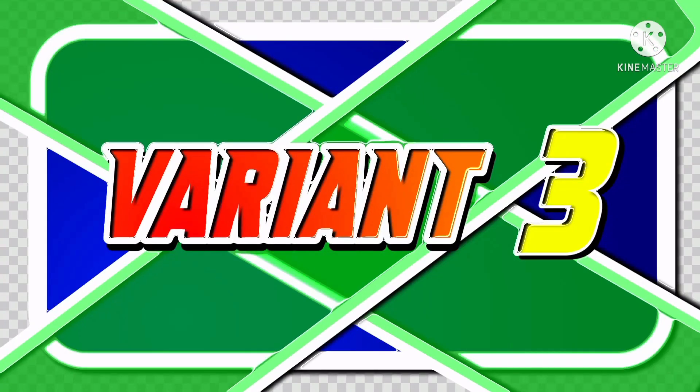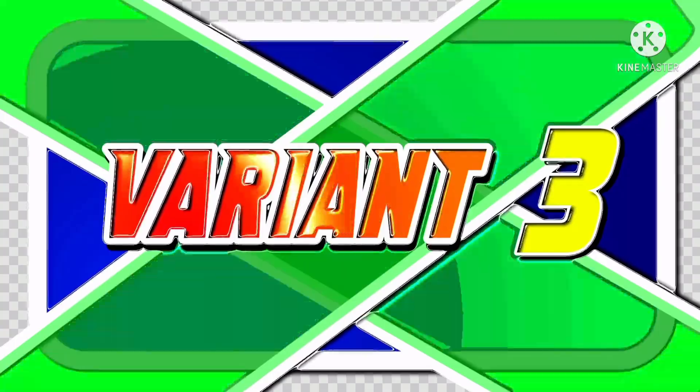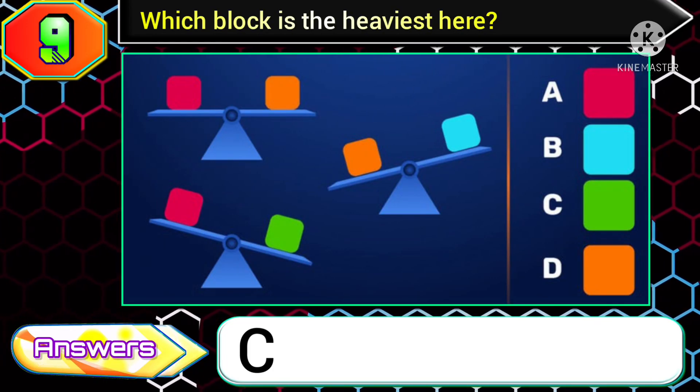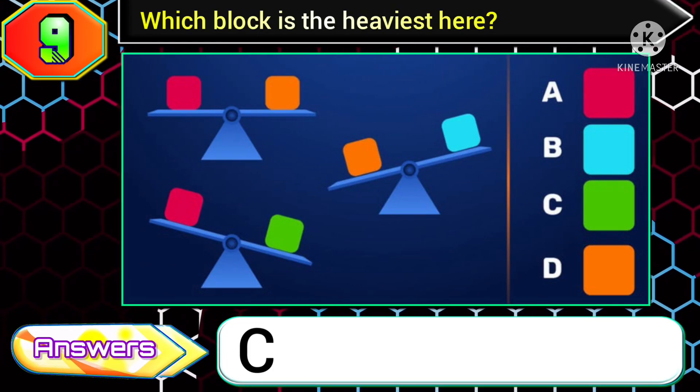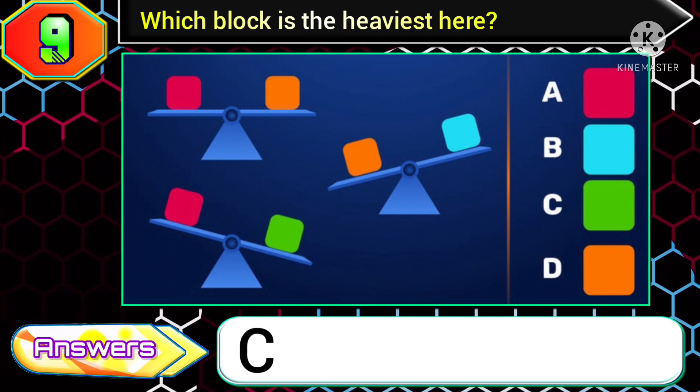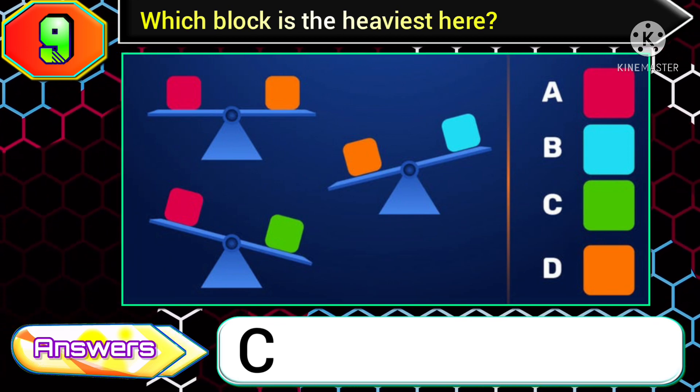Now, the green block in this image is in option C. So you need to choose option C for this type of image.